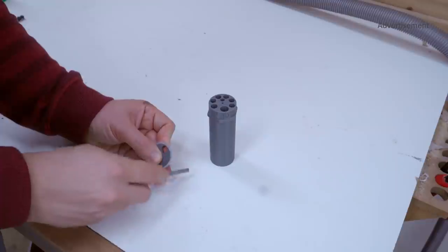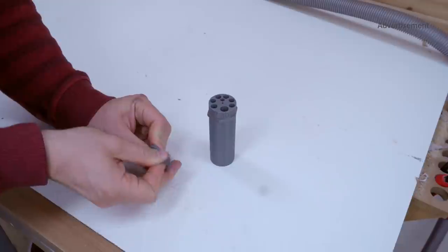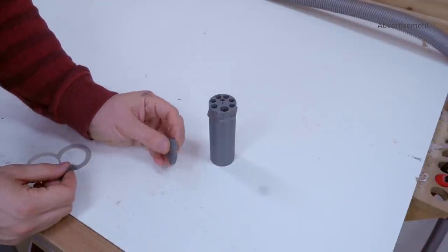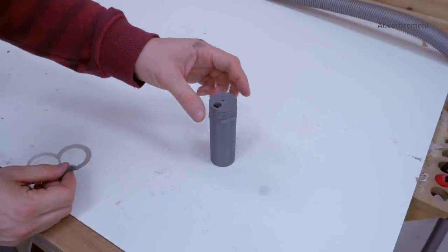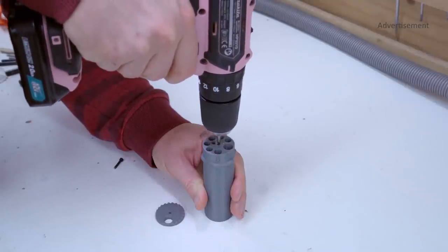I removed the burr with a file and the secondary burr with some steel wool. I cut an M3 thread but you could also use a self-tapping screw.